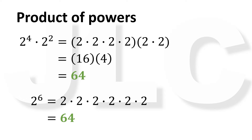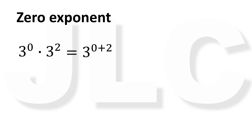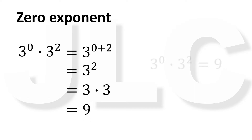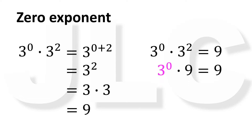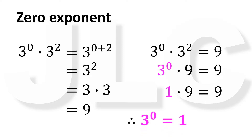Now we will use this property to define the meaning of 0 and negative integer exponents. Let's say we have 3 raised to 0 times 3 squared. By the property of product of powers, this is 3 raised to 0 plus 2, which is 3 squared. 3 squared equals 3 times 3, equals 9. So 3 raised to 0 times 3 squared equals 9, or 3 raised to 0 times 9 equals 9. For this equation to be true, 3 raised to 0 must equal 1, because any number multiplied by 1 equals the number itself.